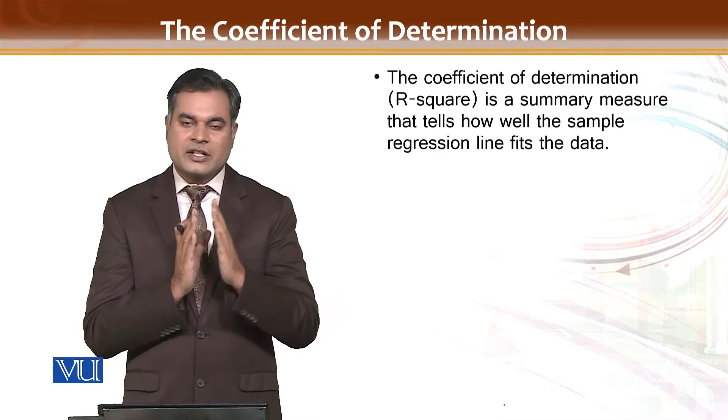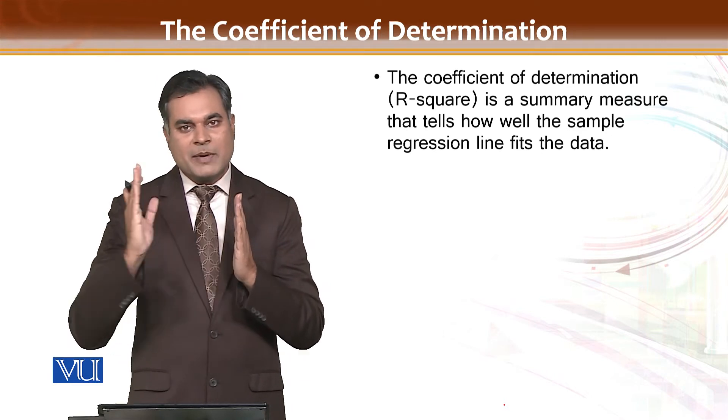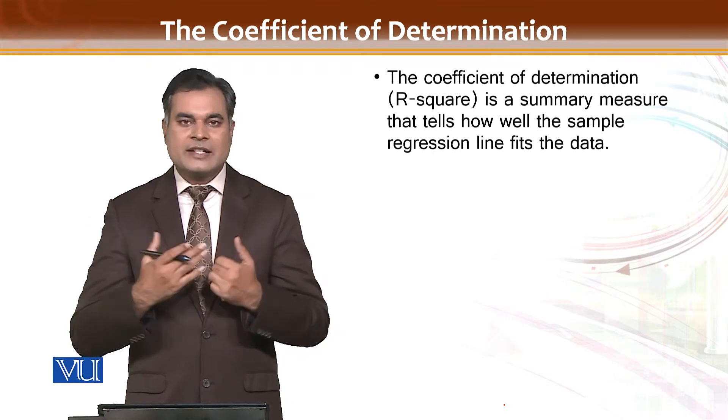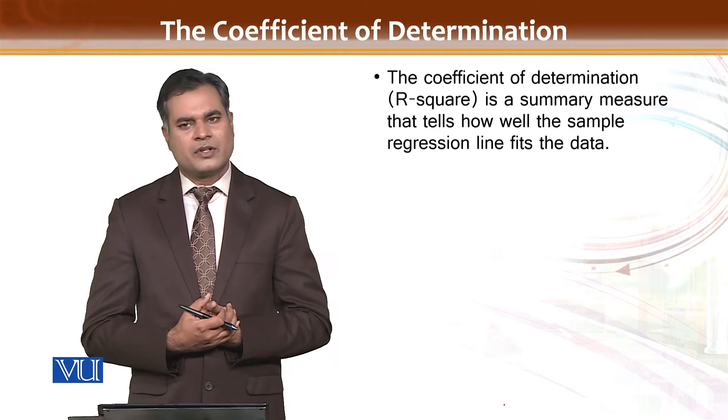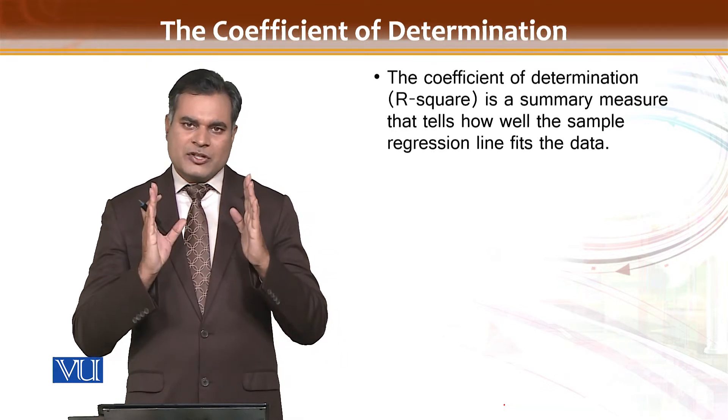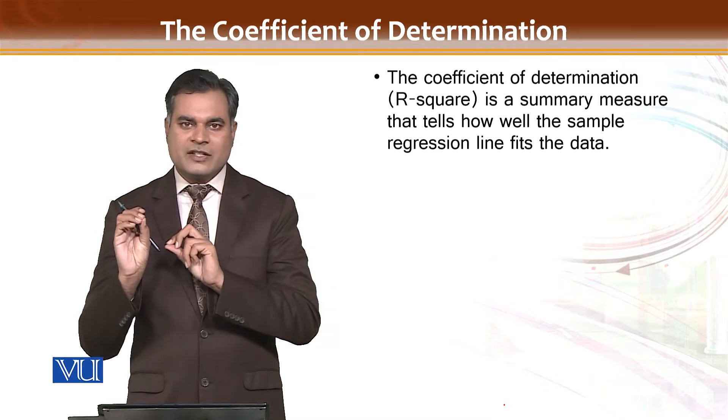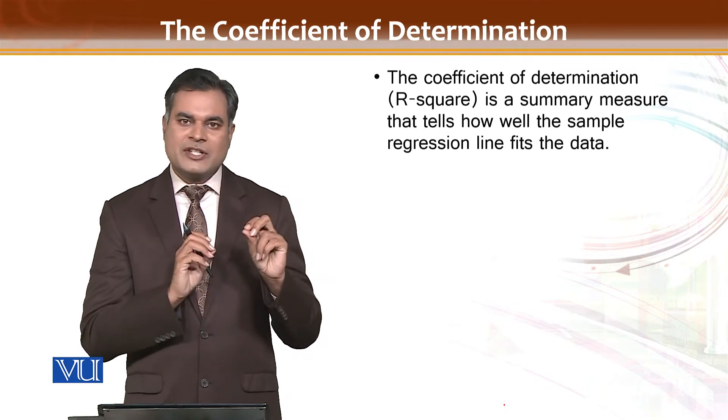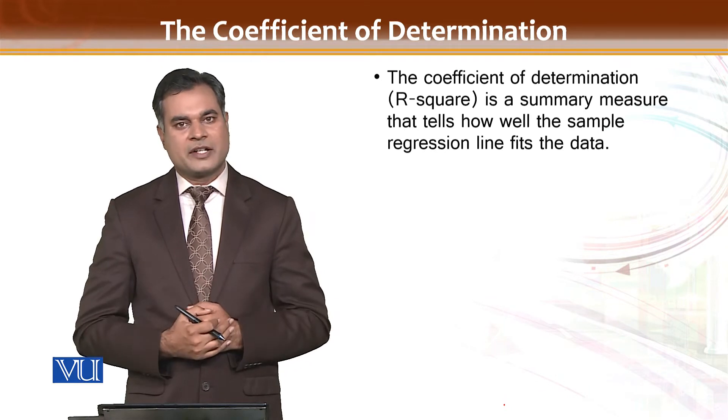We call it explained variation - how much variation in the dependent variable is because of the independent variable, and how much is unexplained variation. For example, if you have a model where quantity demanded is a function of price, then the coefficient of determination will tell how much demand change is happening due to price change, and how much change in demand is due to other factors besides price playing a role.